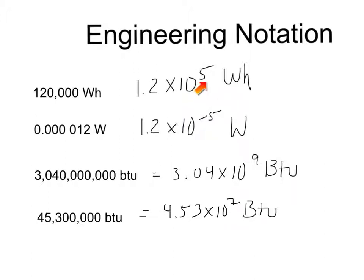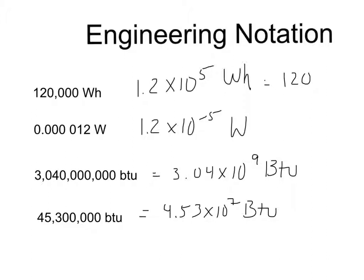For our purposes in this class, you're going to subtract from the exponent until you reach a multiple of 3. However many numbers you subtract, you add that many decimal places to your coefficient. In this case, we have an exponent of 5. We subtract 2 to go from 5 to 3. So we move the decimal over two places, giving us 120 times 10 to the third watt-hours.